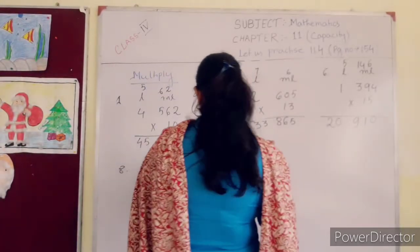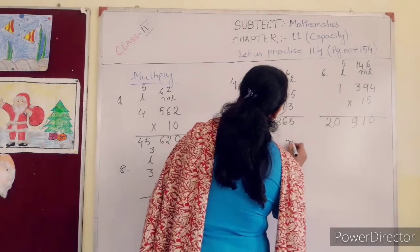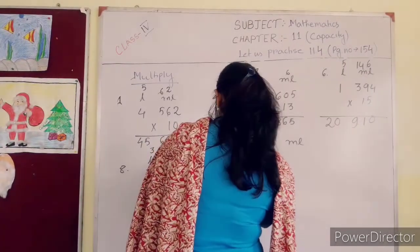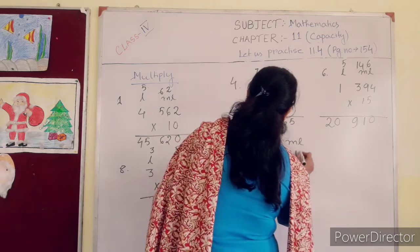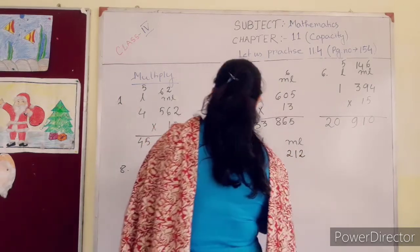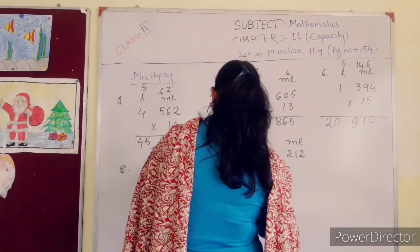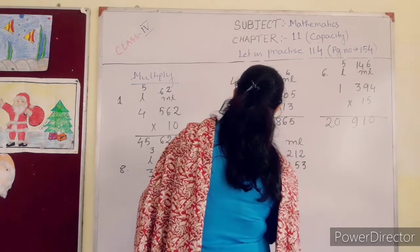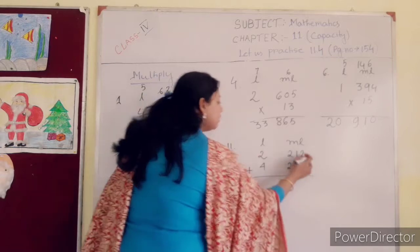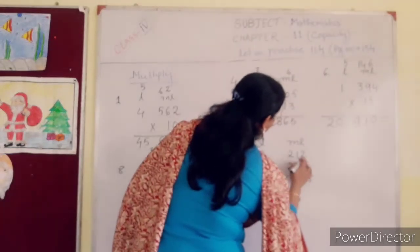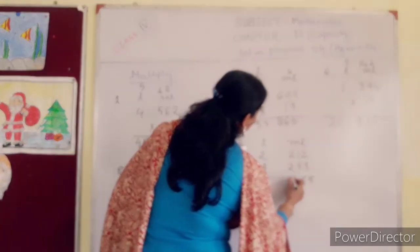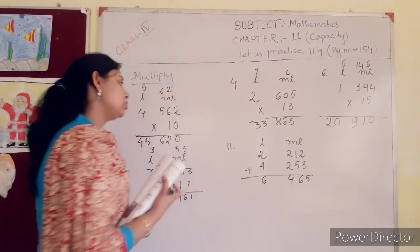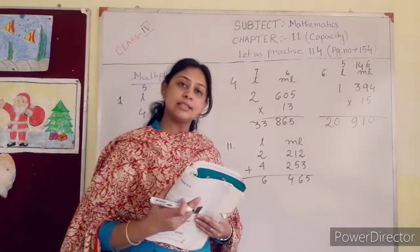First you have to add the numbers. 2 liter 212 ml plus 4 liter 253 ml. Now add these two numbers. 3 plus 2 is 5. 5 plus 1 is 6. 2 plus 2 is 4. 2 plus 4 is 6. So the sum is 6 liter, 465 ml.